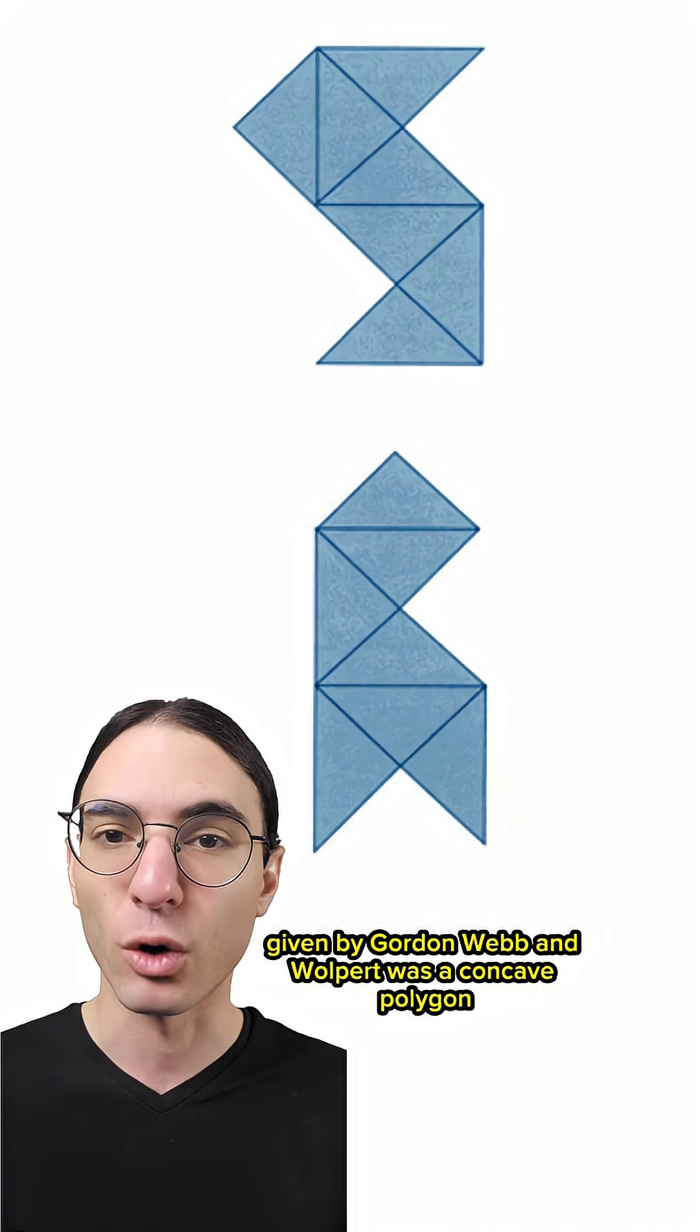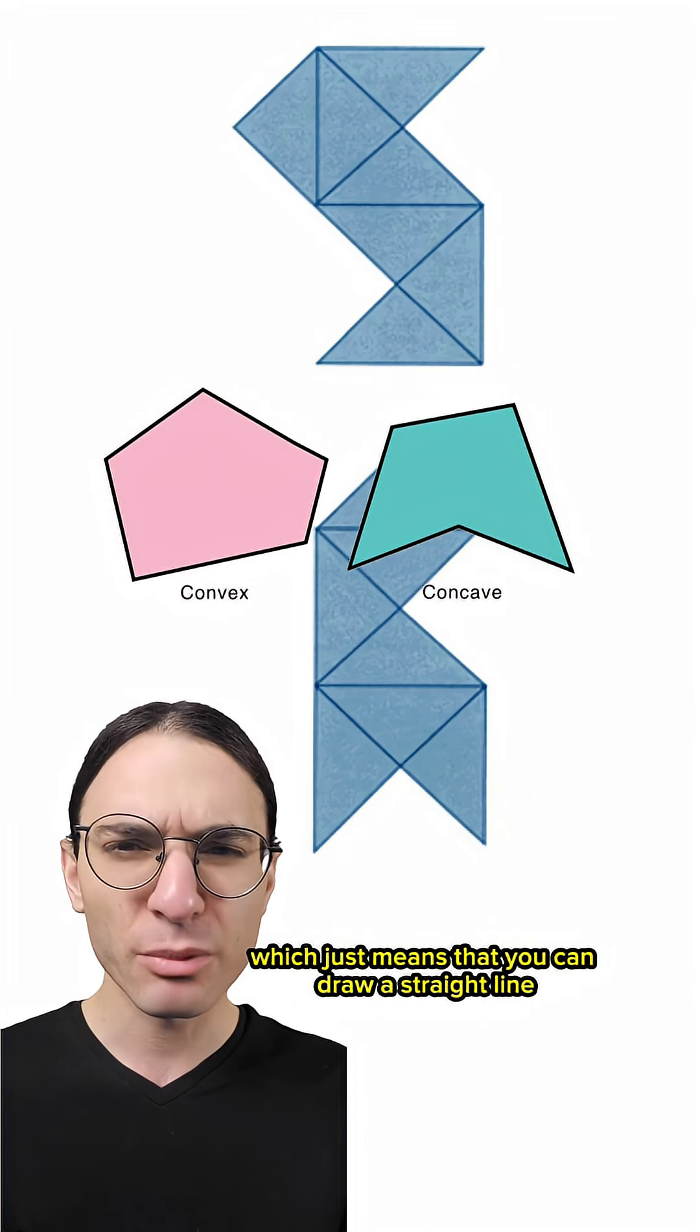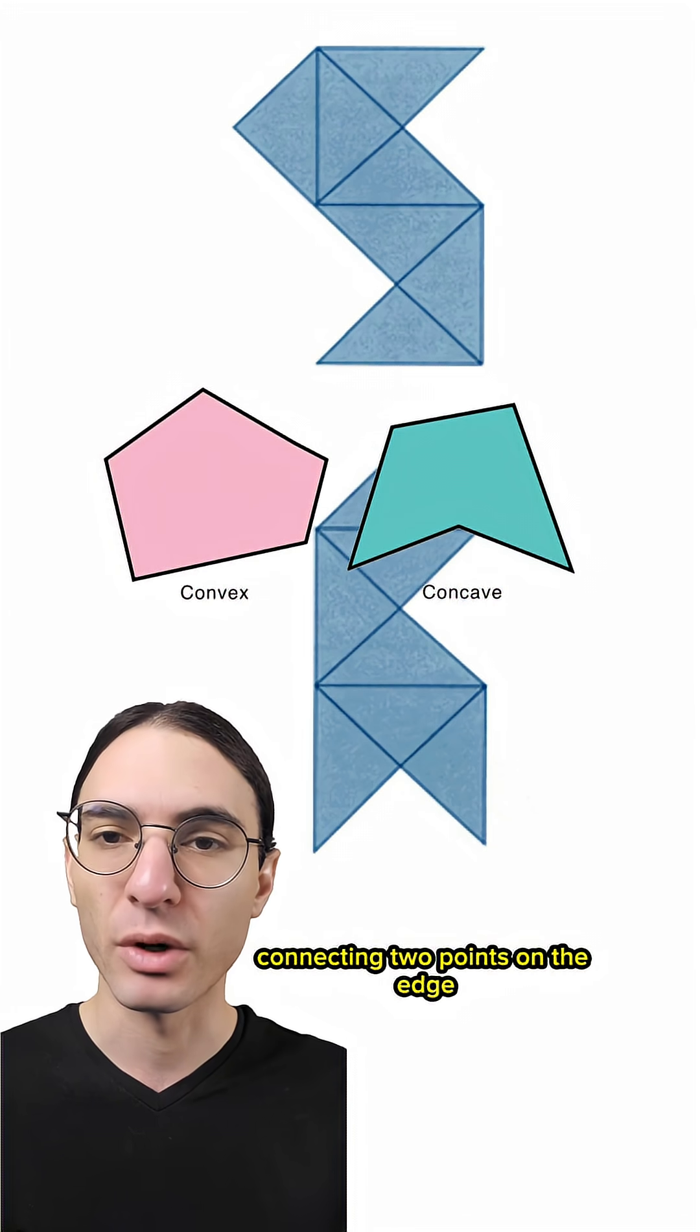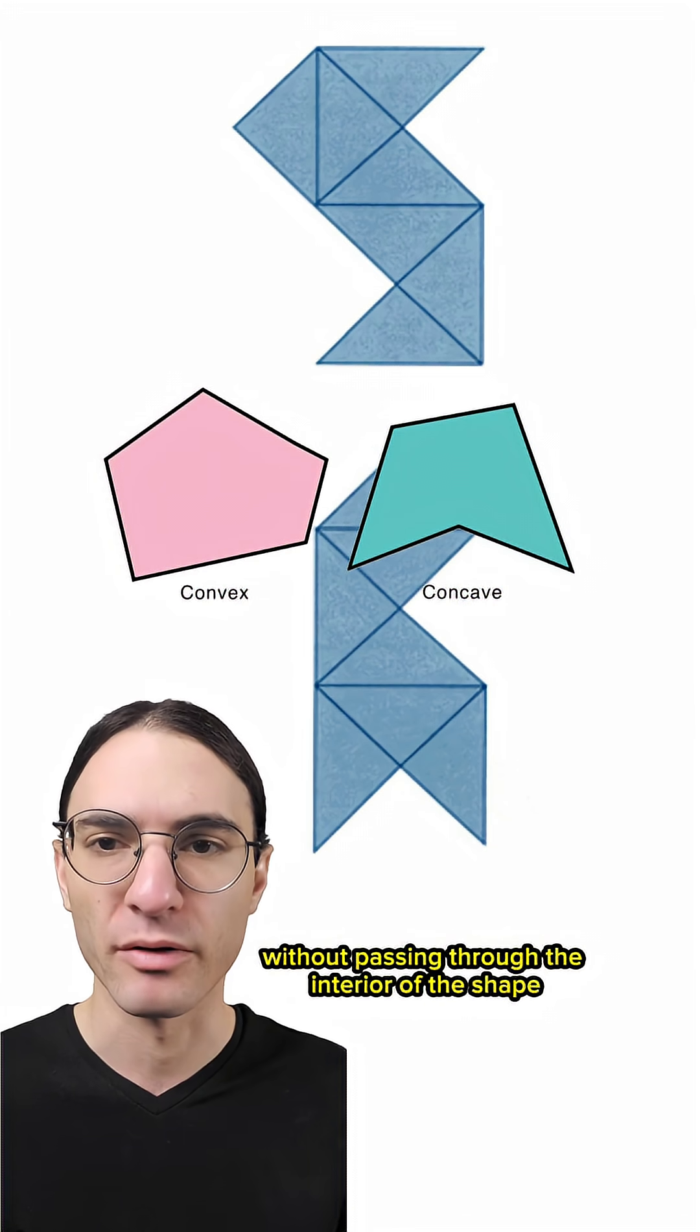The first example, given by Gordon Webb and Wolpert, was a concave polygon, which just means that you can draw a straight line connecting two points on the edge without passing through the interior of the shape.